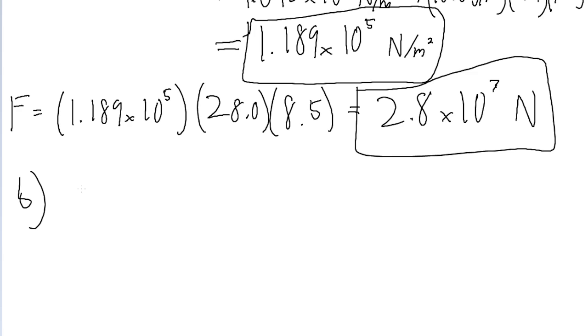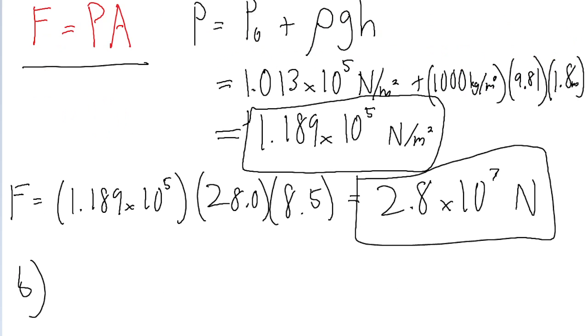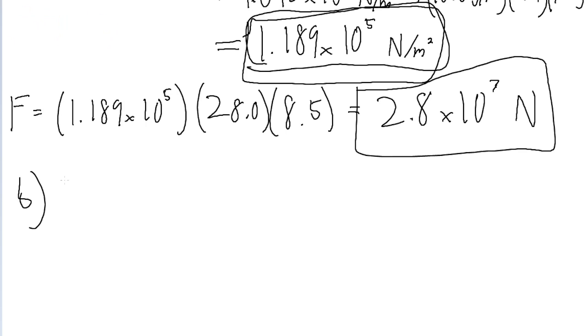Because an important thing to understand about pressure is that pressure is not directional. At a certain depth within a fluid, the pressure has the same value in all directions. So if we're looking at the pool, we established a moment ago that at the depth of 1.8 meters, this is the pressure. That means that anywhere at that depth, the pressure has the same value in all directions. So even against the side of the pool, the pressure still has the exact same value of 1.189 times 10 to the power of 5 newtons per meter squared.